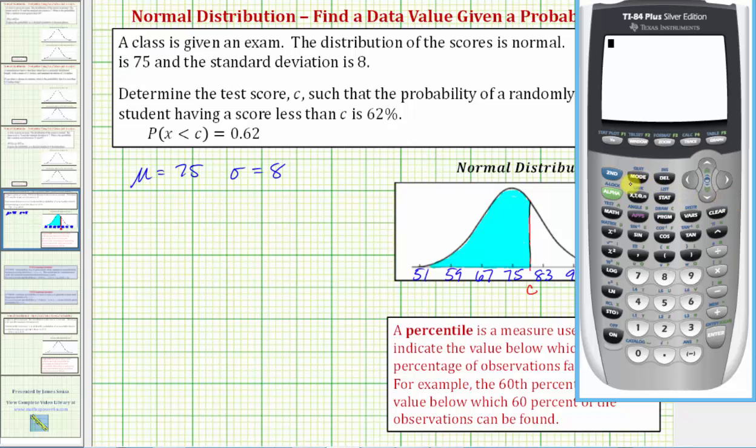From the home screen to access the distribution menu we press second, vars, and option three for inverse norm. Now if you don't see this screen and you see inverse norm on the home screen, you have an older operating system which I'll discuss in a few moments. But if you do have this screen, you have a newer operating system and the first step is to enter the area or probability to the left, which in this case is 0.62. Enter. The mean is 75. Enter. The standard deviation is 8. Enter. And enter again.